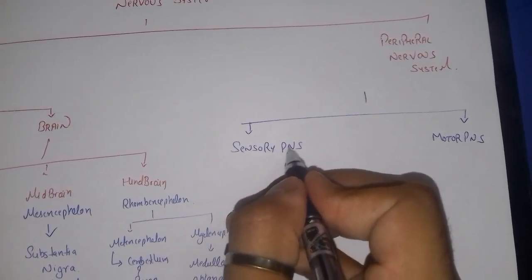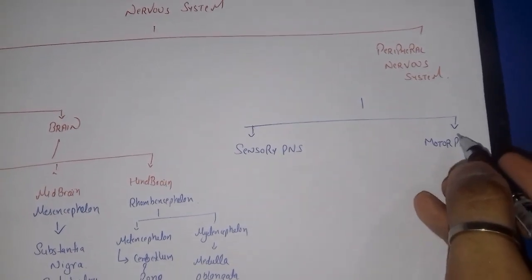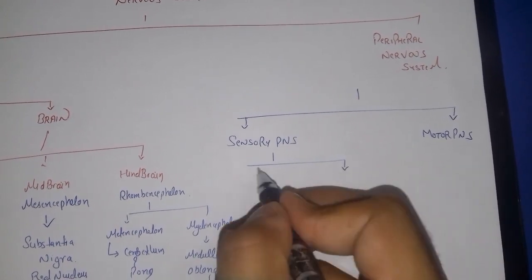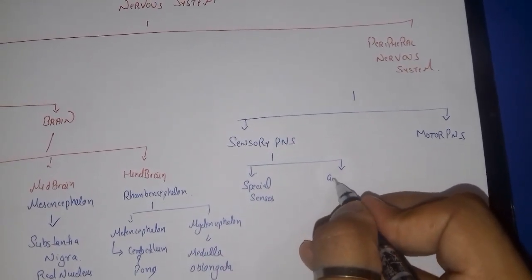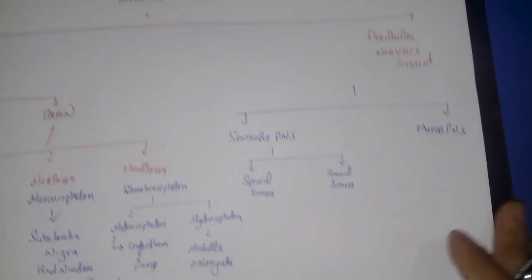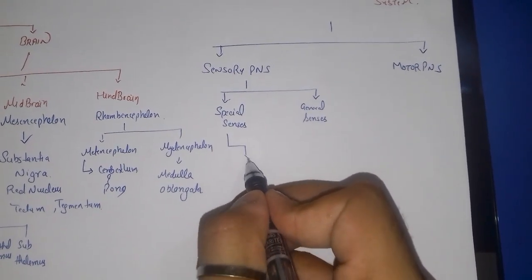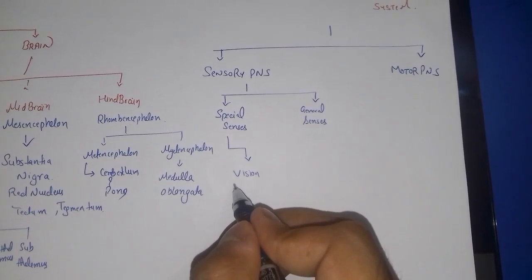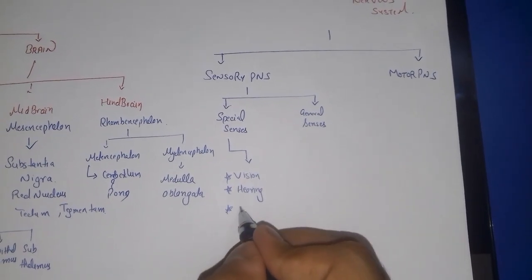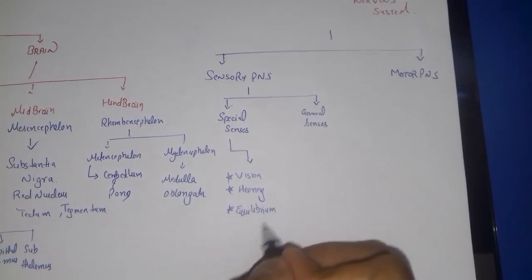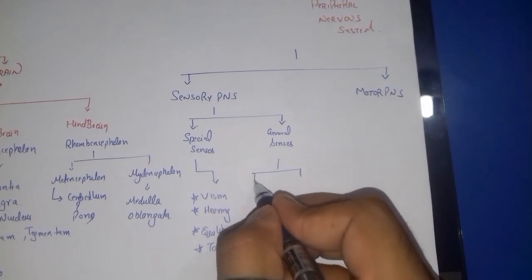Sensory PNS means all those information which can be sensed from the human body, whereas motor means the information which is sent by the brain towards a particular part of the body. Sensory PNS is divided into two parts: the special senses and the general senses. Special senses means all those senses which are sensed only from a single organ, just like vision and hearing — because vision can only be done through the eyes. Other special senses include equilibrium and taste.